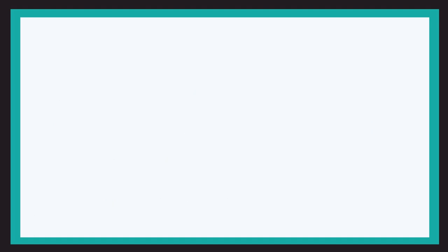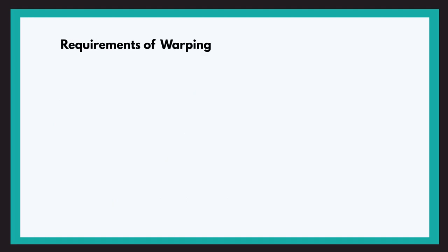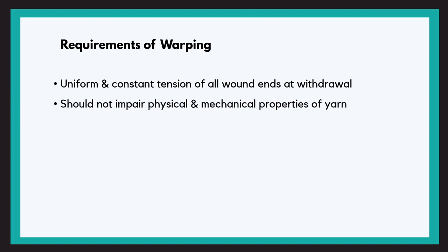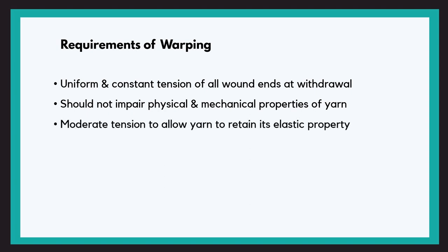Now let us have a look at the requirements of warping. At the time of withdrawal, all the yarn ends should have uniform and constant tension to ensure a proper package with less defects. The process should not impair the physical and mechanical properties of the yarn. The tension has to be moderate so that the yarn retains its elastic property.